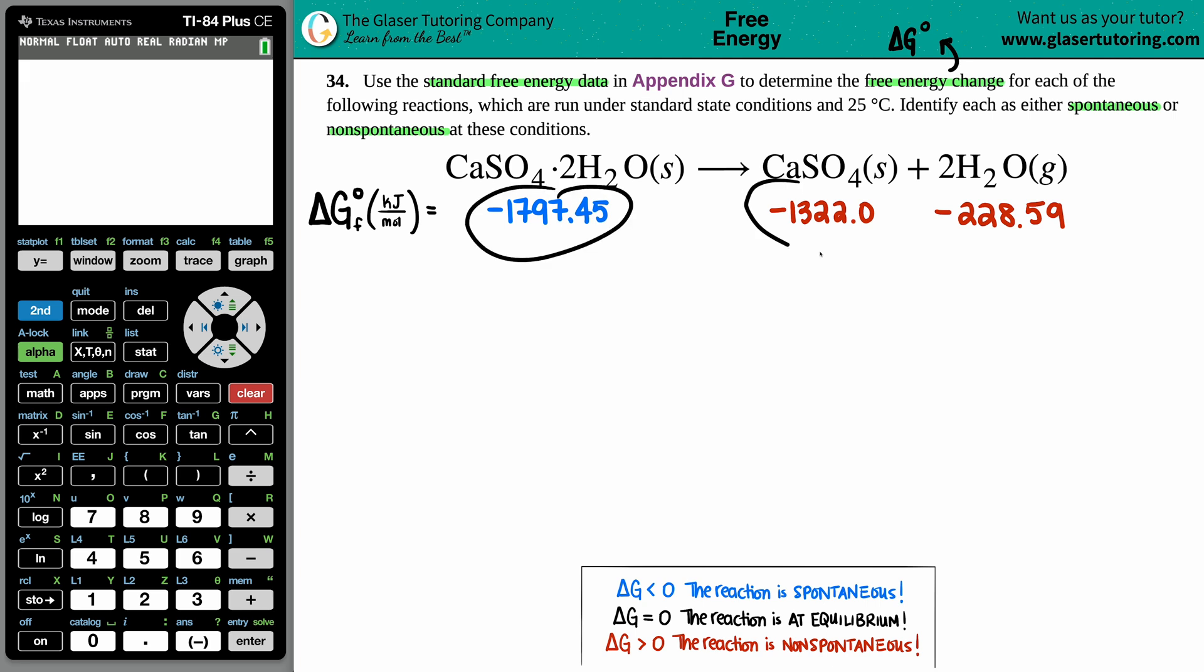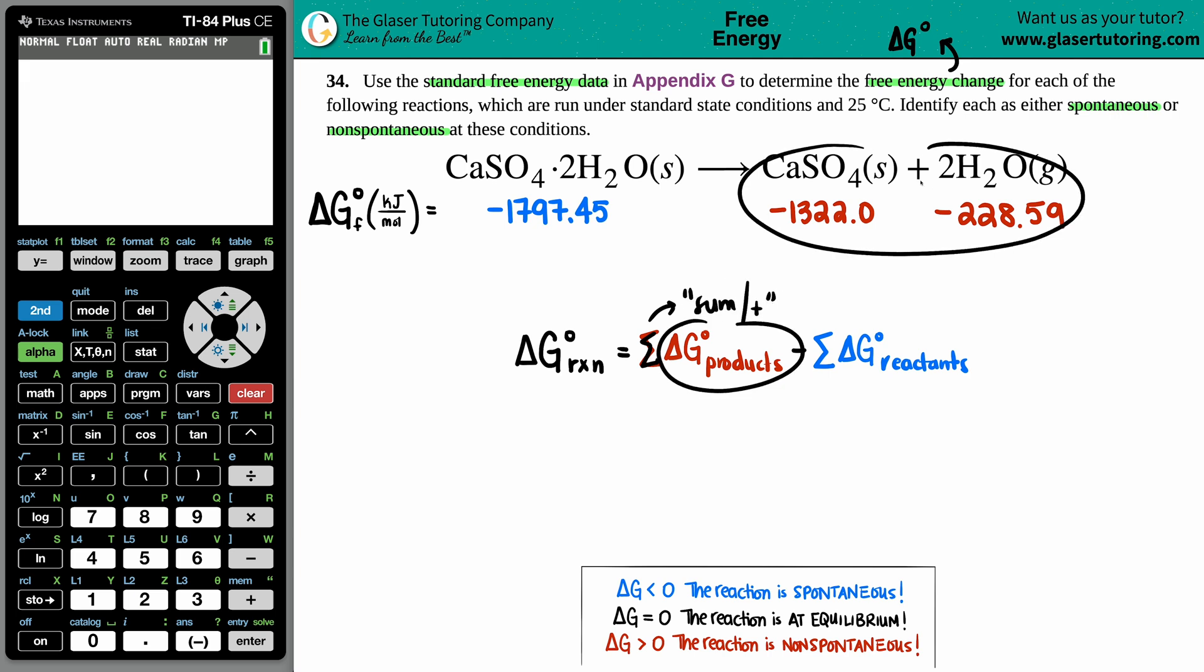I went to the back of the textbook to find out what the ΔG values for each component are. What are we going to do with these values? There's an easy formula to find the whole free energy change—it's this formula right here. ΔG for the whole reaction (rxn) equals the sum of your ΔG of your products minus the sum of the ΔG of your reactants.